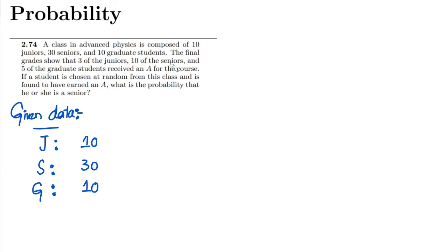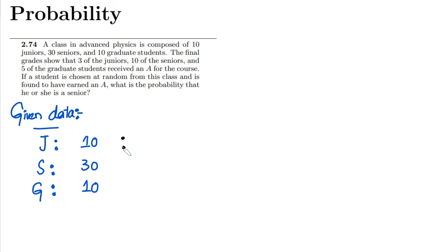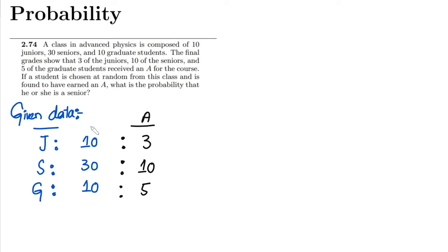The final grades show that three of the junior students, 10 of the seniors, and five of the graduate students received an A for the course. So three of the juniors, 10 of the seniors, and five of the graduate students have received a grade A.